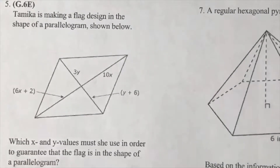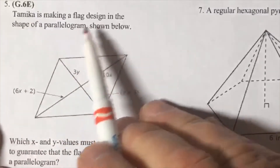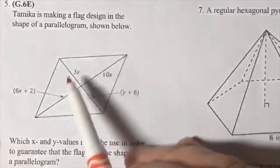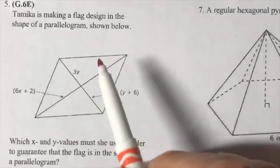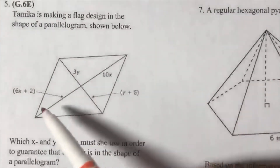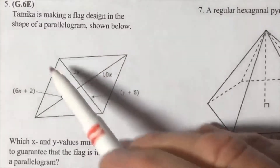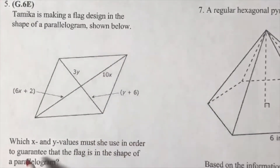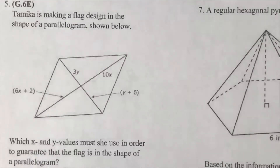Number five. Tamika is making a flag designed in the shape of a parallelogram shown below. You need to start recalling information about parallelograms. Notice all this information and what it's pointing to — it's pointing to parts of the diagonals. Which X and Y values must she use in order to guarantee that the flag is in the shape of a parallelogram? We have to use properties of parallelograms here.